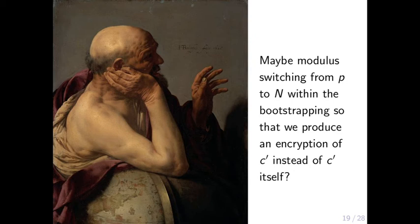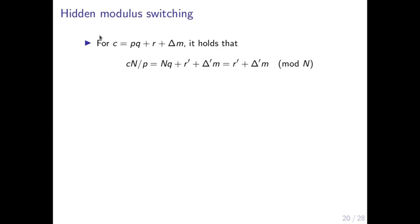Maybe we can switch from p to n in a hidden way using the homomorphic operations of the GSW scheme, so that c' is only produced in an encrypted way — and having an encryption of c' is safe. We observe that multiplying c by n/p replaces p by n, with the noise and scaling factor multiplied by n/p. Considering this mod n, the q·p term disappears, leaving the new noise plus the message times the scaling factor.